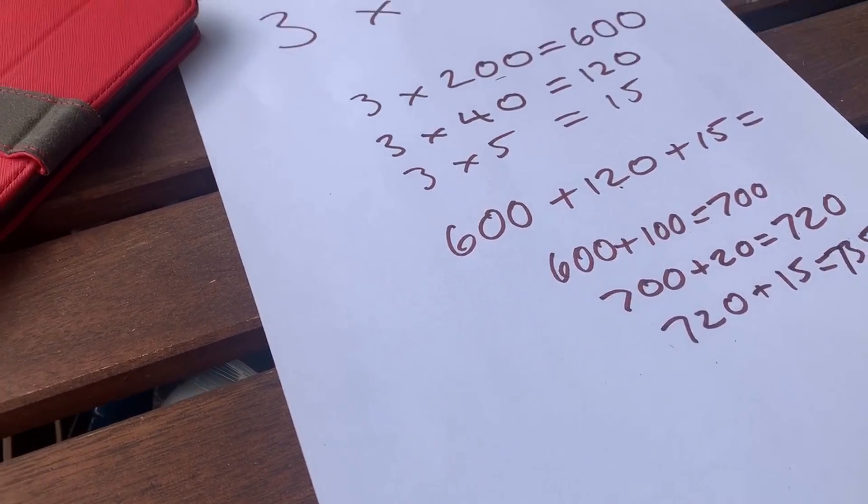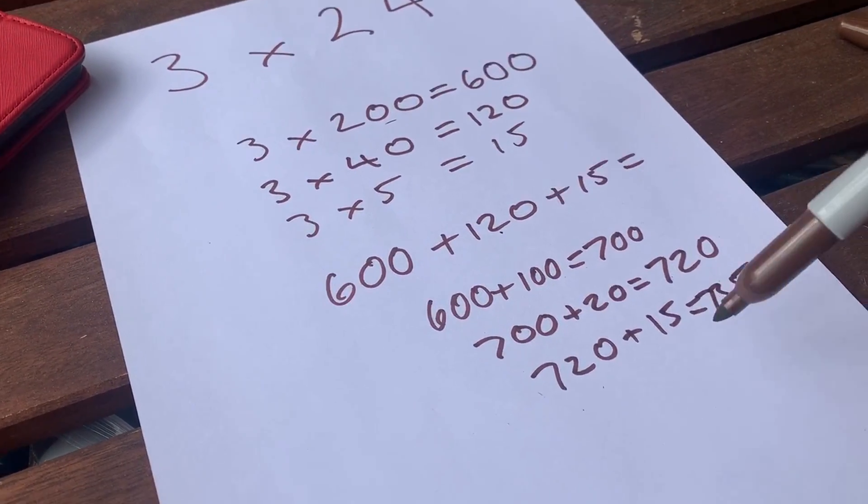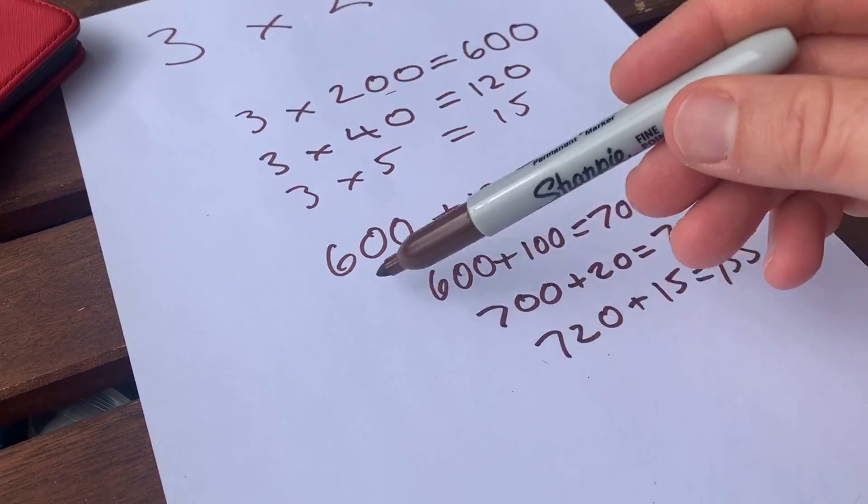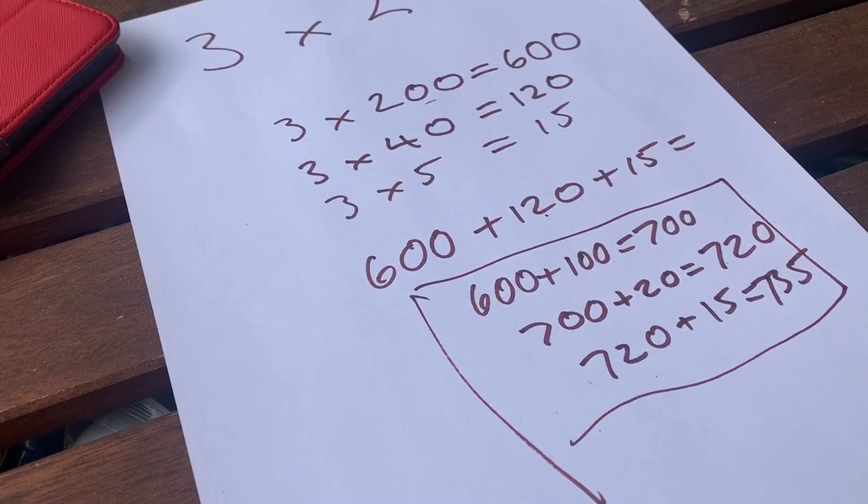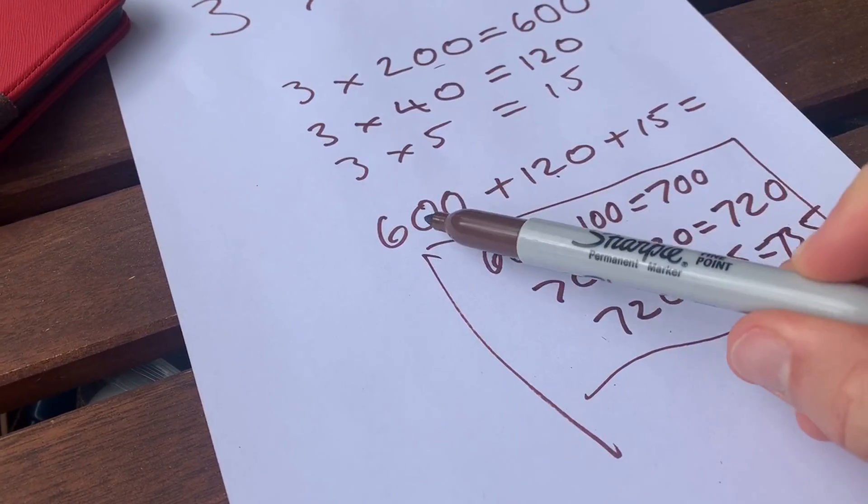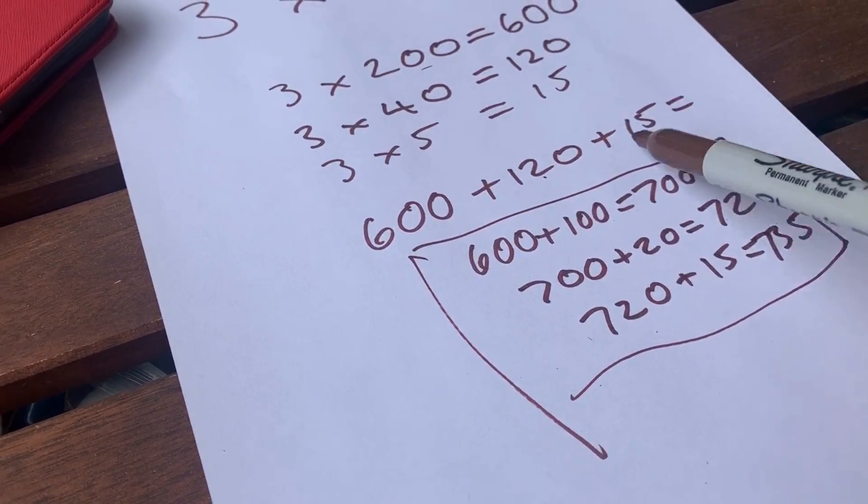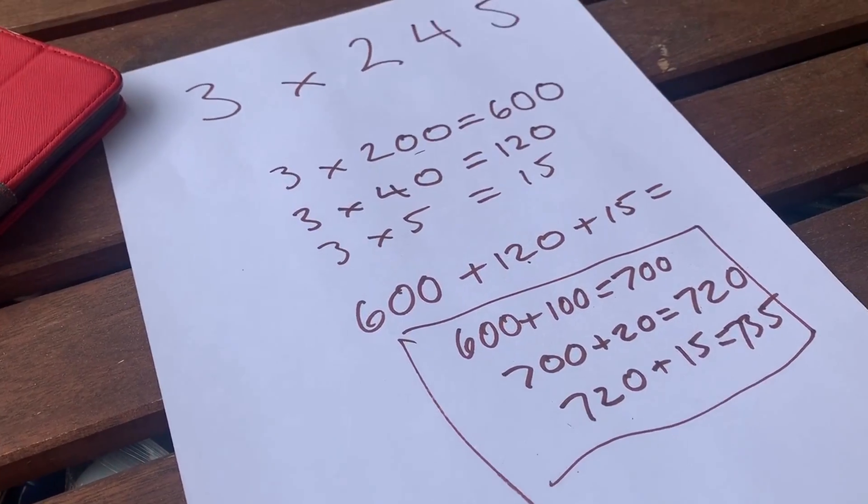...is 735. So that would equal 735. You don't need to do all this bit in depth, okay? In our own heads, we're probably more going, adding these up. Have a go, have a play.